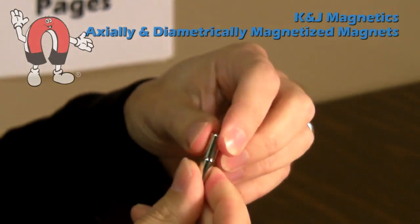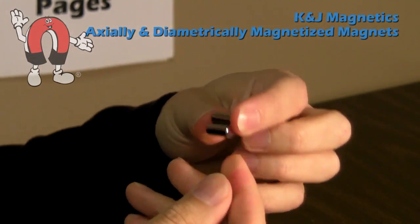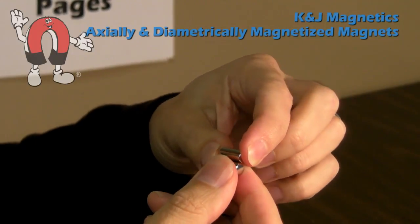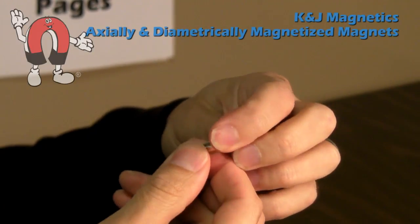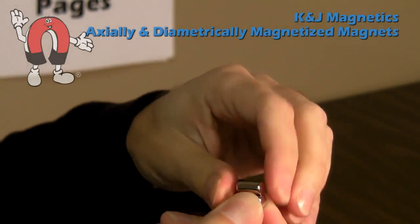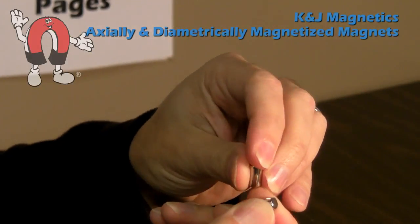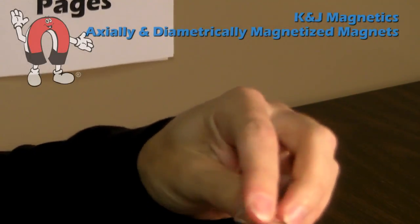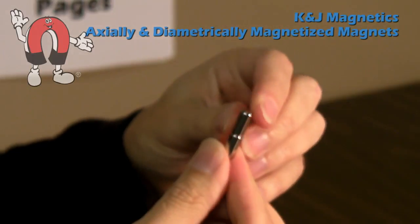The same is not true of axially magnetized magnets. If you rotate one around that way, they tend to pull to go end to end. They will stick a little side to side, but they really tend to pull more to get their poles touching end to end.